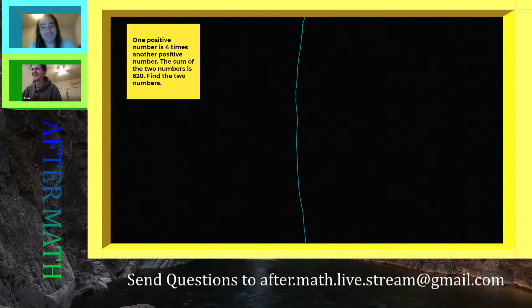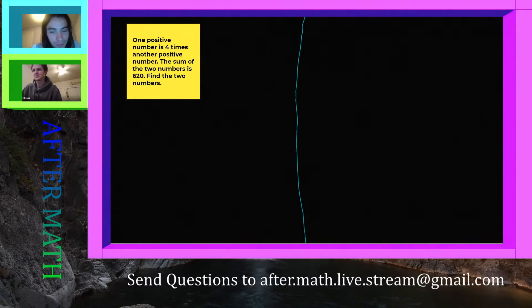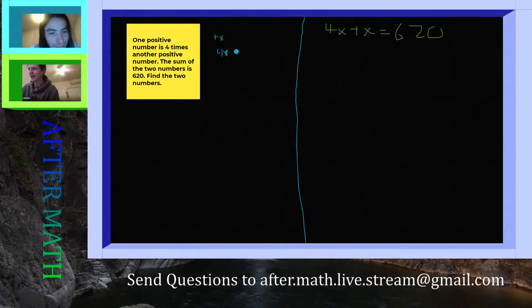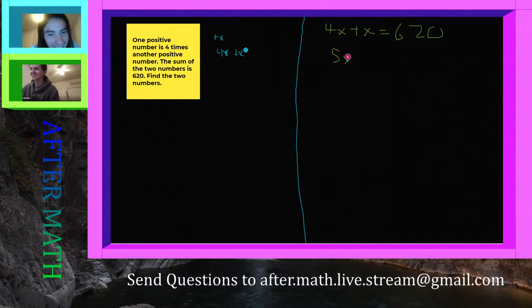Okay, ready? Here we go. One positive number is four times another positive number. So one positive - that's going to be a plus sign and we're going to call it x - is four times, so that's going to be 4x. Jayden, you're not talking, dude, you gotta talk. Oh, so one number is four times the other number. I'm going to combine like terms right now because they both have x and I'm going to write that equal to 620.